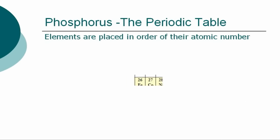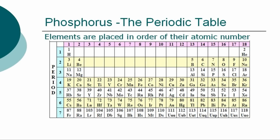The periodic table is a chart showing the symbols and the atomic numbers of all known elements, such as Phosphorus, in one large grid. The chemical elements of the periodic table are placed in order of their atomic numbers. Atomic numbers increase as you move across a row, called a group, or down a column, called a period.